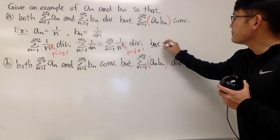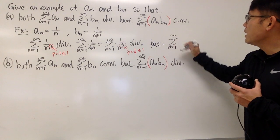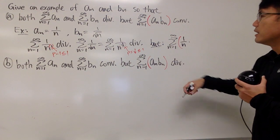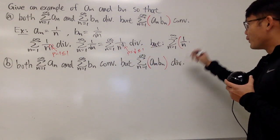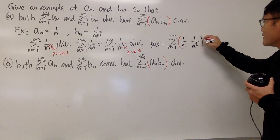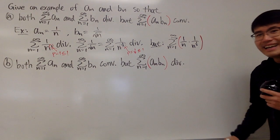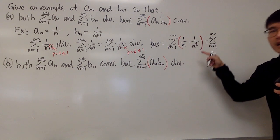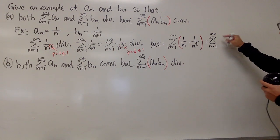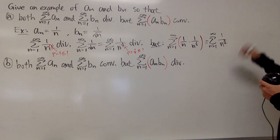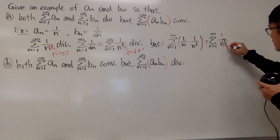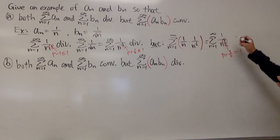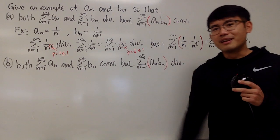But the sum from N=1 to infinity of aₙ times bₙ gives us 1 over N times 1 over N to the 1/2 power. Multiplying this out gives us the sum from N=1 to infinity of 1 over N to the 3/2 power, since 1 plus 1/2 equals 3/2. As you can see, p = 3/2, which is greater than 1. So this series converges. We have satisfied the conditions.